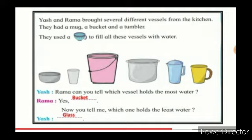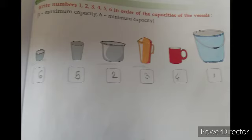I will show you the vessels and you have to tell me which will hold more water and which will hold less water. This is an oral video. Now children, open workbook page number 107. Write numbers 1, 2, 3, 4, 5, 6 in order of the capacities of the vessels.